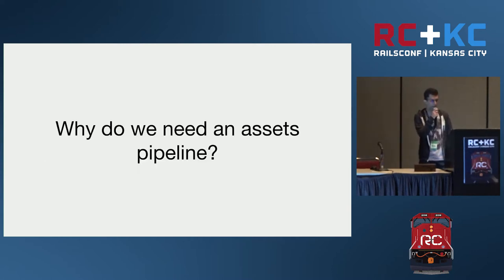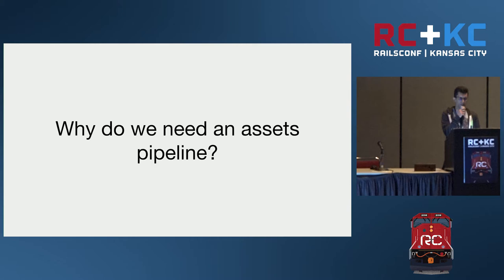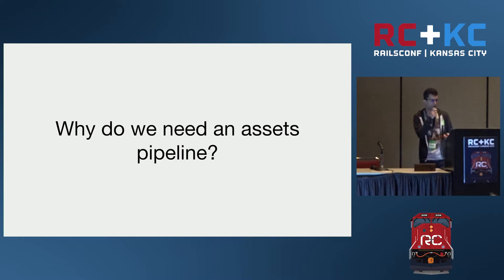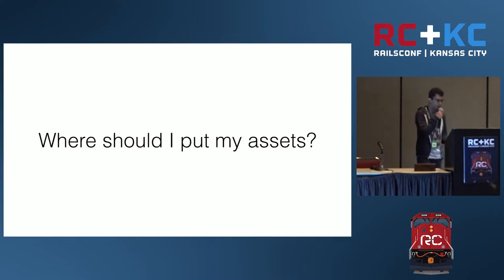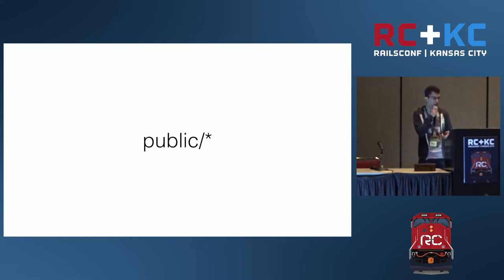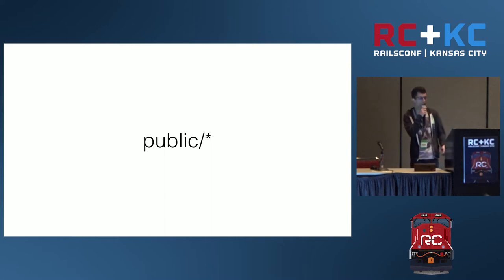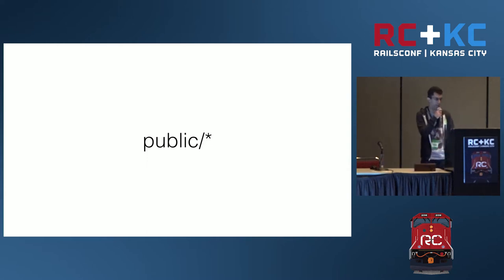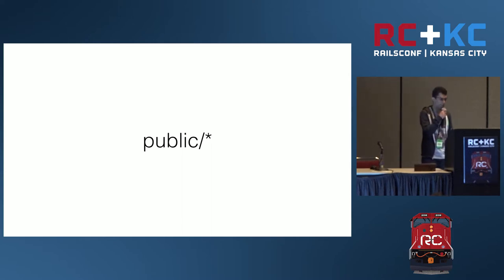Why do we need the asset pipeline? Before we had the asset pipeline in Rails — I think it was introduced in Rails 3.1 — we had a question: where should I put my assets? We did not have any convention on how to handle client-side code in a Rails application, so we had to put our assets in the public folder. We had no convention, no code organization, and you'd easily end up with a lot of files you didn't even know were being used.